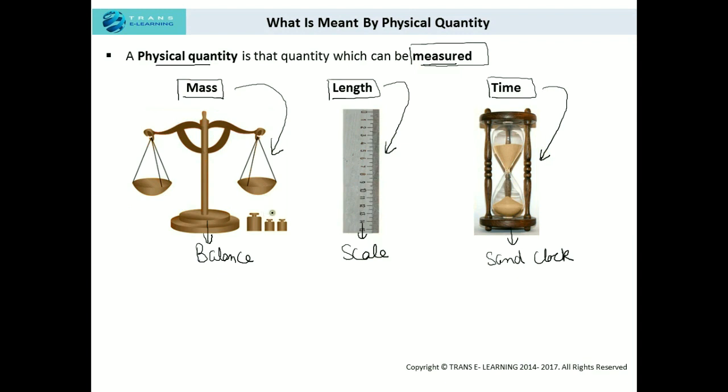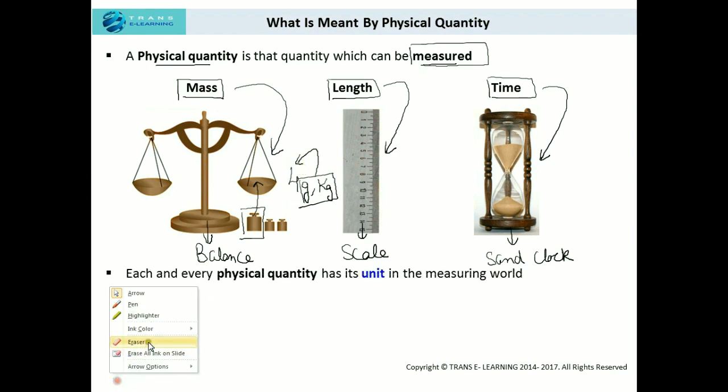The second important thing about physical quantities is that we need to specify them with the help of some specific unit. Like for example, if I'm taking this weight here and I'm weighing it, I will write the mass as 4. Now, what is 4? What am I going to write here? So either I will be writing gram or I will be writing kg. I have to write some unit associated with this numeric value.